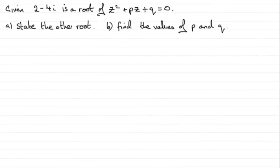Now in this video I'm going to do this question again. I did an earlier video one way and I'm going to show you another version. We're given that 2 minus 4i is the root of this equation z squared plus pz plus q equals 0. We've got to state the other root and find the values of p and q.